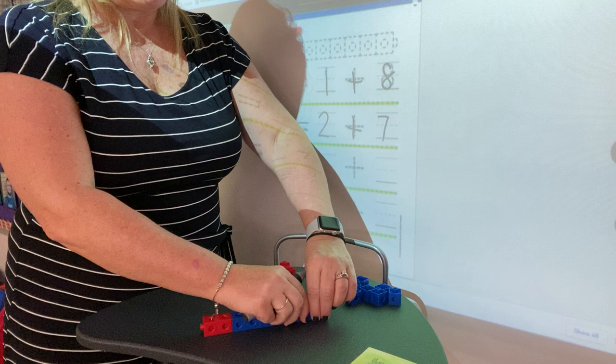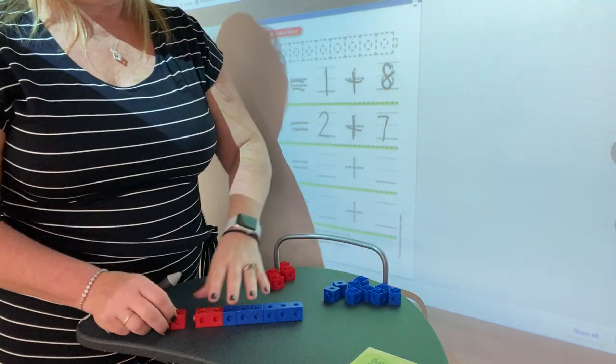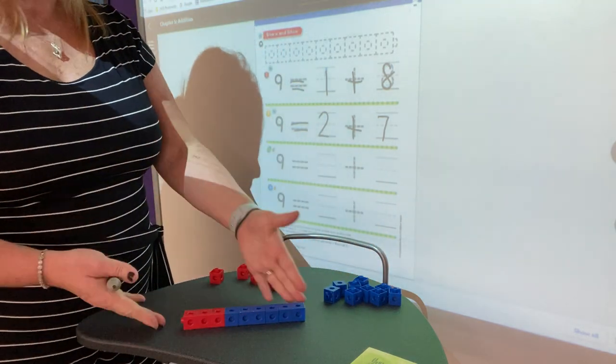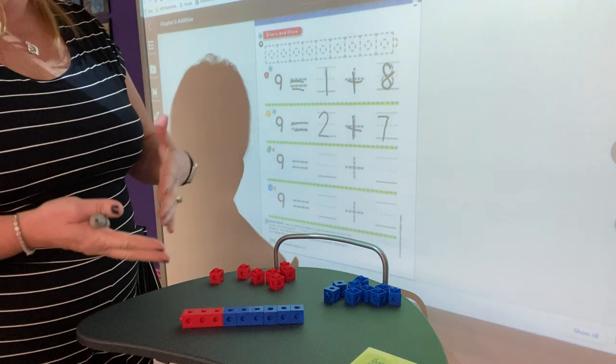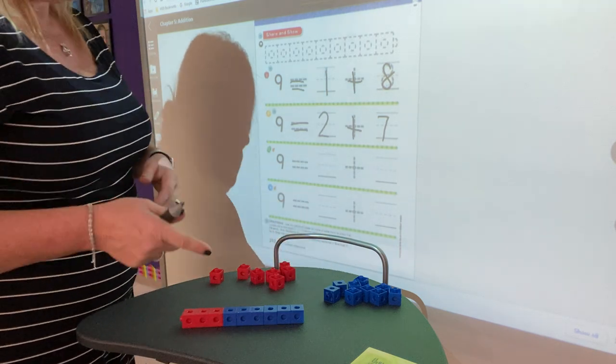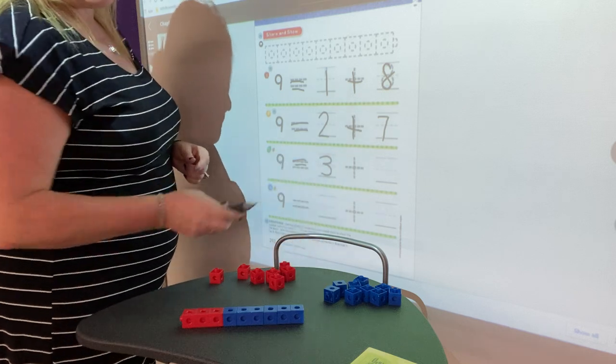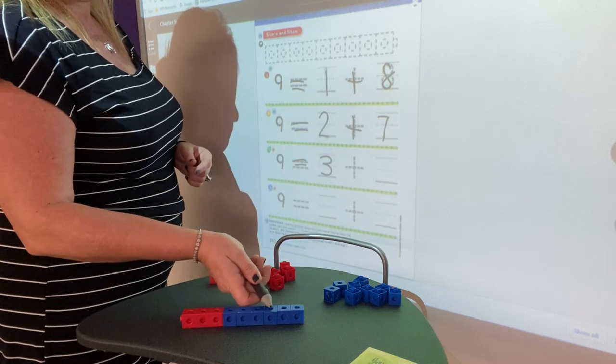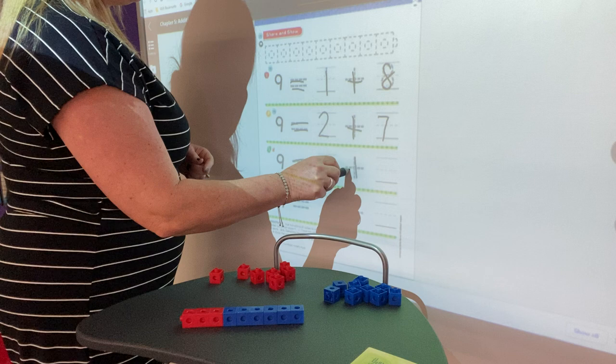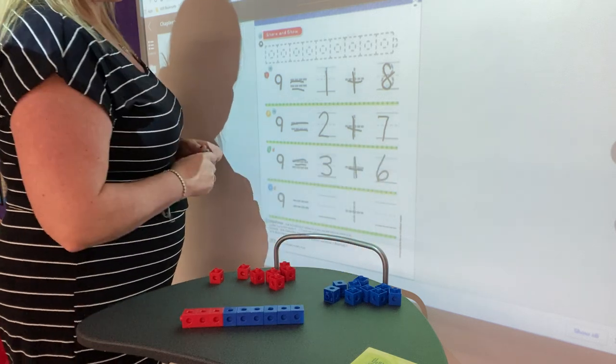I'm going to take away a blue, add a red. And so I still have 9 cubes. I just have them in a different combination of colors. Now I have 9 is equal to 3 reds and 1, 2, 3, 4, 5, 6 blue. So 9 is equal to 3 plus 6.